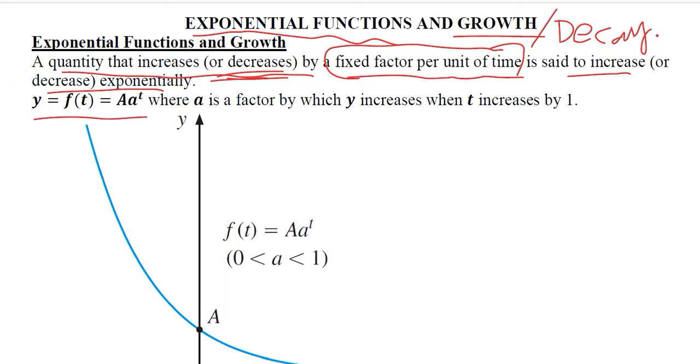If this is the standard form in which we have a capital A which is a coefficient and a is the base and t, that is time, is in the exponent, then a is that factor by which y increases when t increases by 1 unit. This is that factor that we were talking about and it is equal to a.